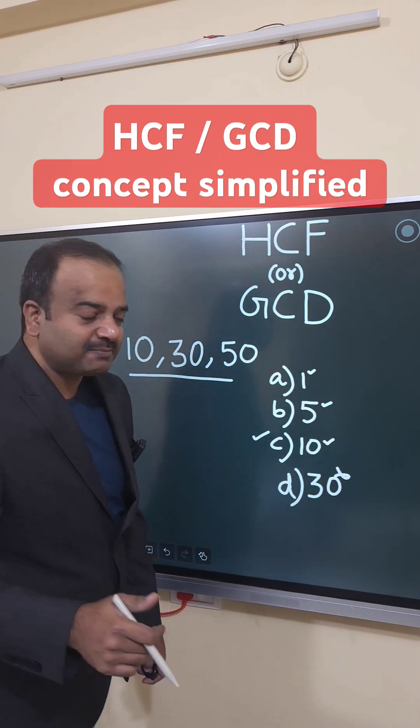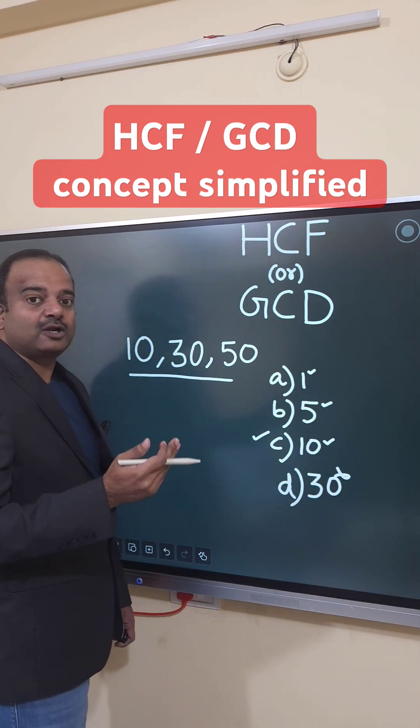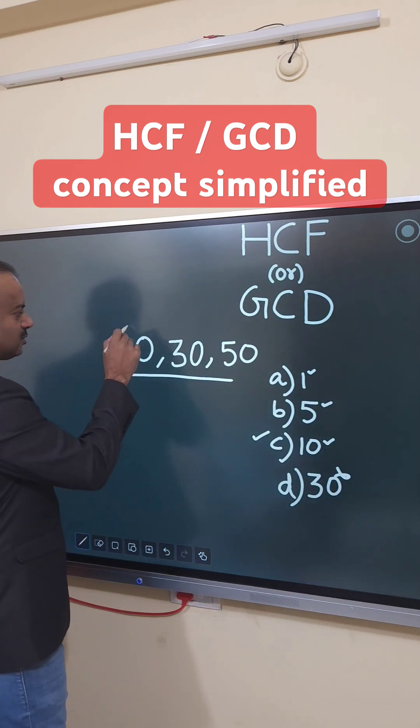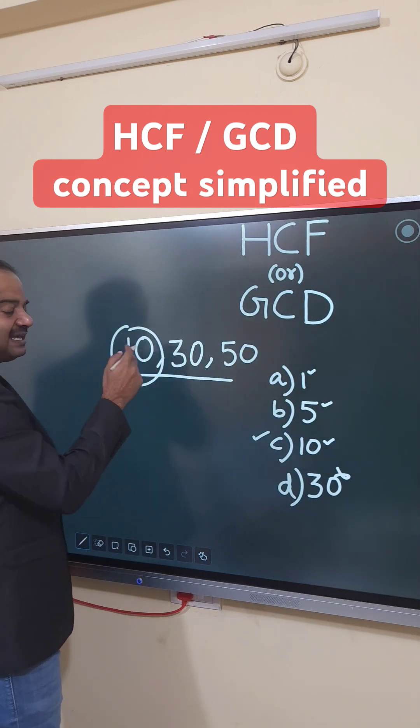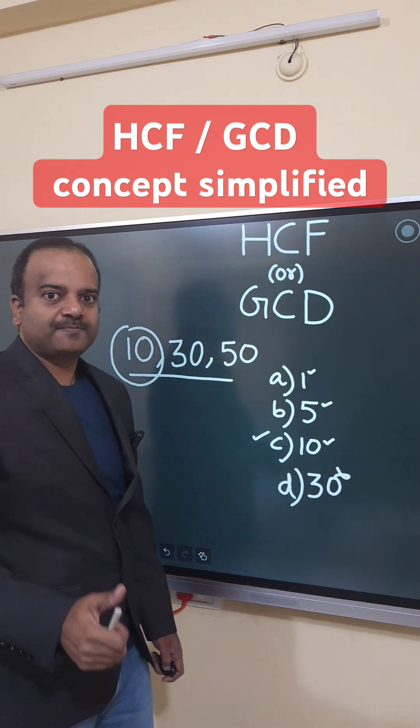One thumb rule to remember: the highest common factor is always less than or equal to the smallest number in the group.